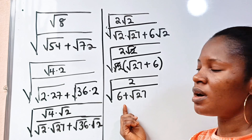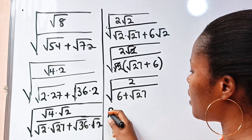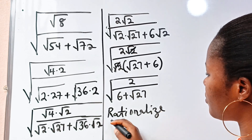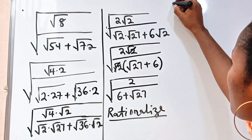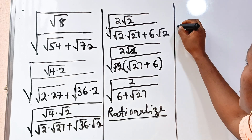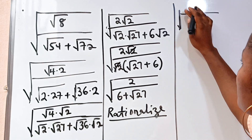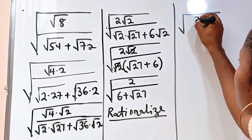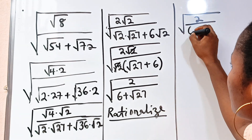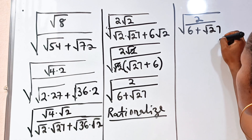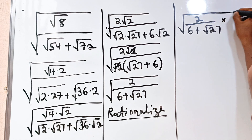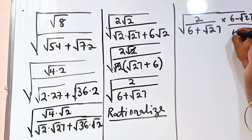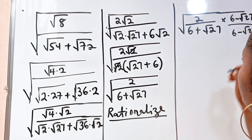At this point we need to rationalize. So let's rationalize. We will have the square root of 2 divided by 6 plus root 27, multiplied by 6 minus root 27, over 6 minus root 27.